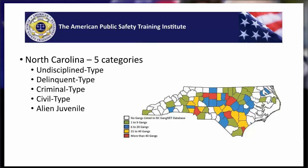Number three, criminal type status. A case like this would be a juvenile who committed a curfew violation or motor vehicle offense that wouldn't be a crime for adults, but is subjected to a criminal court. This is the dividing line between the undisciplined and delinquent and the criminal type status. Number four is a civil type status — a juvenile under delinquency court jurisdiction for an infraction that is civil in nature.